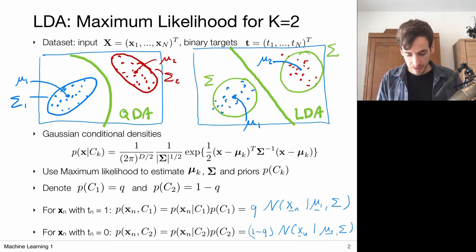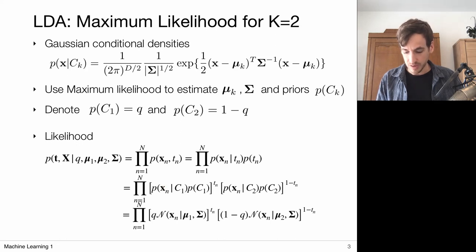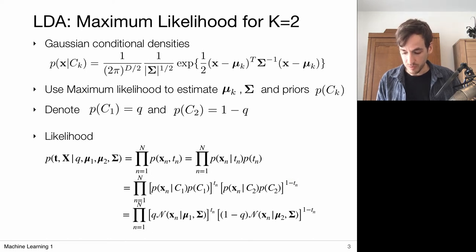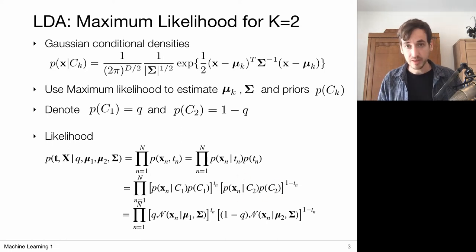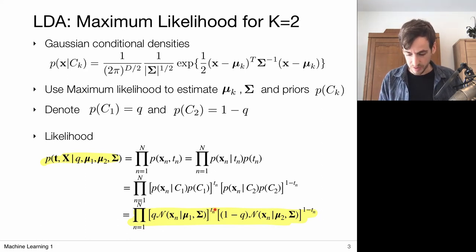I make use of the fact that this is binary classification with labels coded as 1 or 0, which allows a selection mechanism: whenever t_n=1, we select the joint probability for class 1; whenever t_n=0, something to the power 0 evaluates to 1 so that term is ignored, and we select the probabilities for class 2. This gives a nice expression for the likelihood as a product where we select the appropriate distribution by taking these powers.